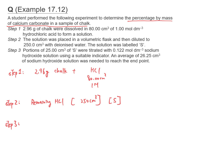Step 3: portions of 25 cm³ of solution S were titrated with 0.122M sodium hydroxide solution using a suitable indicator. An average of 26.25 cm³ of sodium hydroxide solution was needed to reach the endpoint. The HCl reacts with NaOH; the acid concentration is unknown, volume is 25.00 cm³, and the NaOH concentration is 0.122M with volume 26.25 cm³.